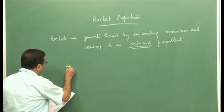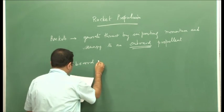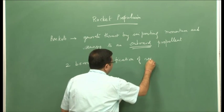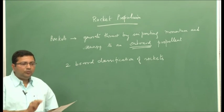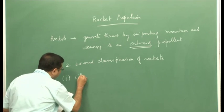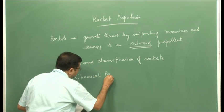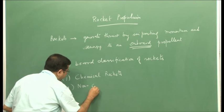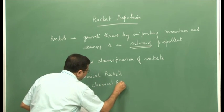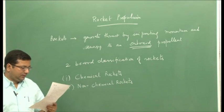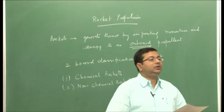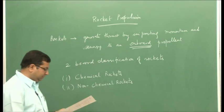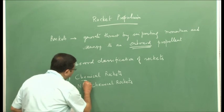There are two broad classifications of rockets. Rockets can be classified under two broad categories: first is chemical rockets, and the second is non-chemical rockets. In this course, we will primarily deal with chemical rockets, but towards the end we will have some lectures on non-chemical rockets like electric propulsion systems. So first, let us look at chemical rockets.